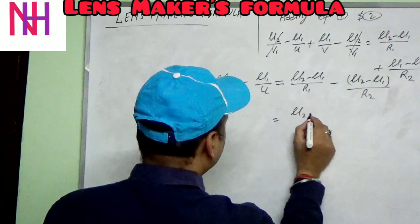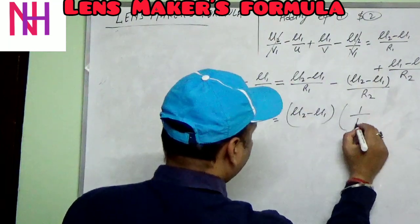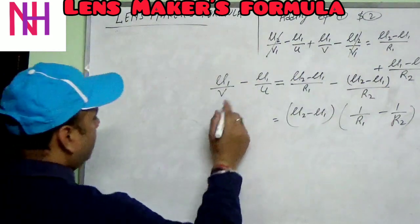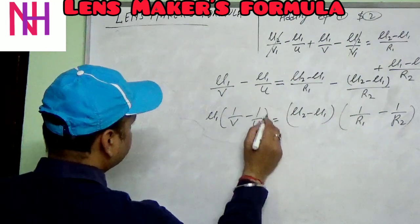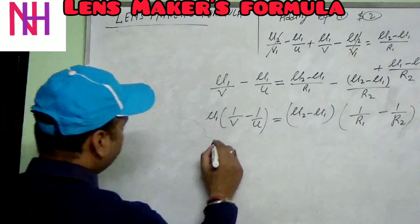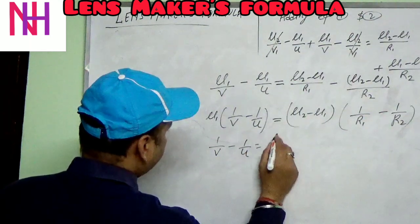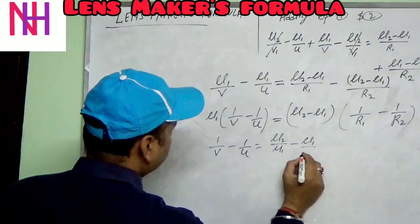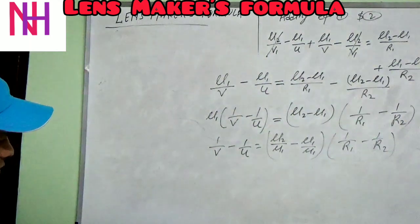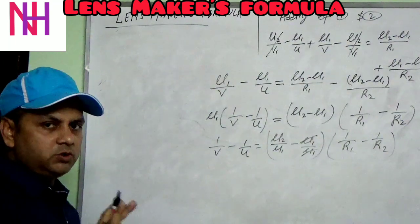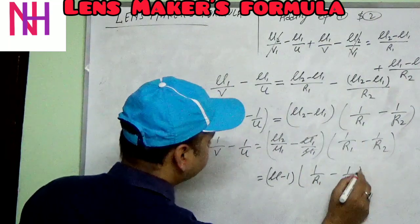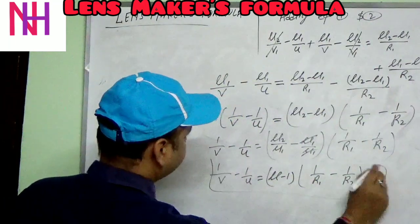After cancellation, we get: mu1/v minus mu1/u equals mu2 minus mu1 over R1, plus mu1 minus mu2 over R2. Dividing both sides by mu1, we get: 1/v minus 1/u equals mu2/mu1 minus 1, into 1/R1 minus 1/R2. Since mu2/mu1 is the refractive index ratio, we write it as mu. So the formula becomes: 1/v minus 1/u equals (mu minus 1)(1/R1 minus 1/R2).